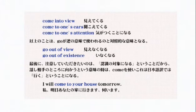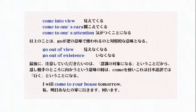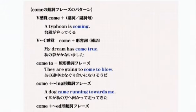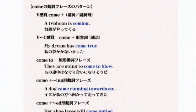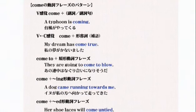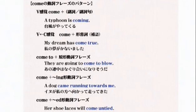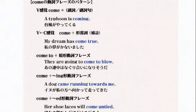逆にgoを使えば「go out of view」は見えなくなる、「go out of existence」はいなくなるということです。最後に注意してほしいのは、「I will come to your house tomorrow」、あなたの家に行きますはgoではなく、あなたの家に出現しますということなんですね。